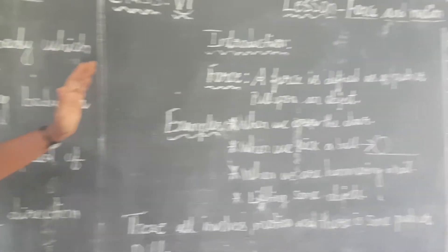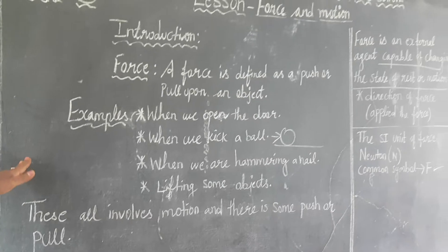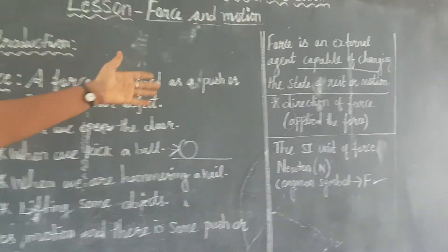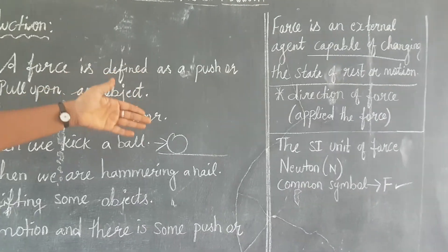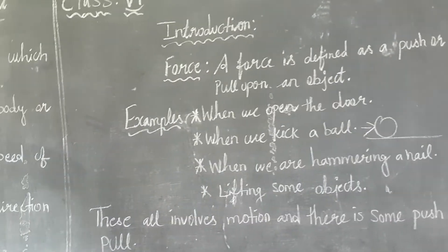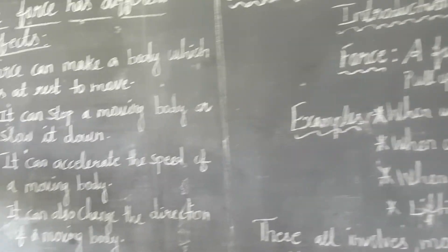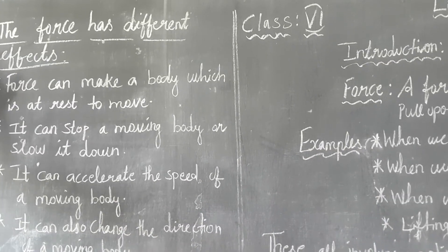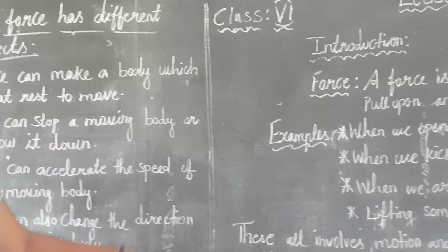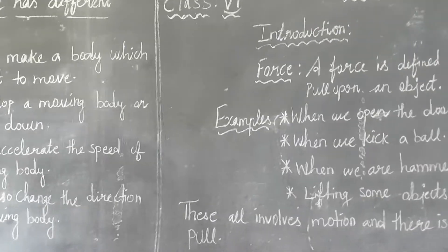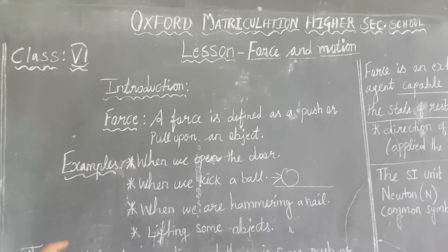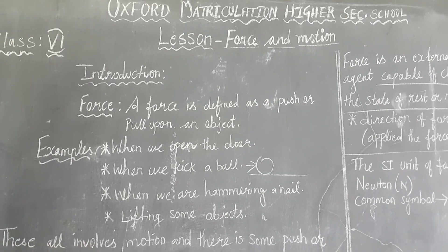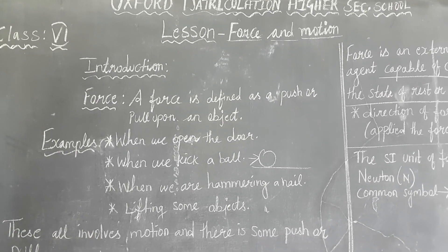Understood — what is force, what are the examples, the external agent definition, formula, symbol, and the effects that force has. In the next class, we are going to see about forces — there are two types: contact and non-contact forces. I hope all of you understood what is force.